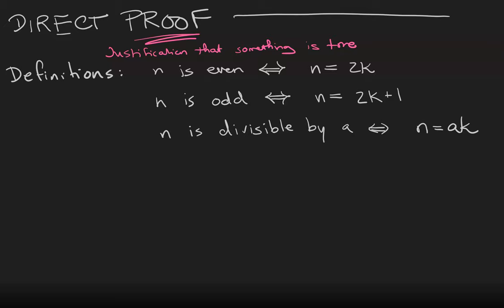So in these proofs we're going to be proving facts about the integers and we're going to take these as the definitions of the words even, odd, and divisible. So an integer n is even if there exists an integer k such that n can be written as 2 times k. For example, the number 8 can be written as 2 times 4.